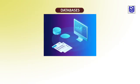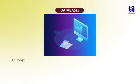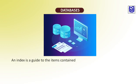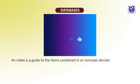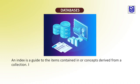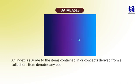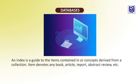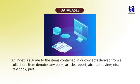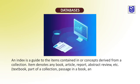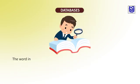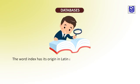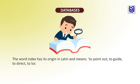So, databases. An index is a guide to the items contained in all concepts derived from the collection. An item denotes any book, article, report, abstract reviews, etc. — a textbook, part of a collection, a message in a book or article in a journal, etc. The word index has its origin in Latin and means to point out, to guide, to direct, to locate.